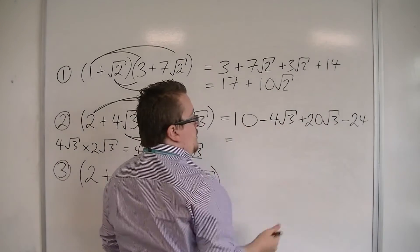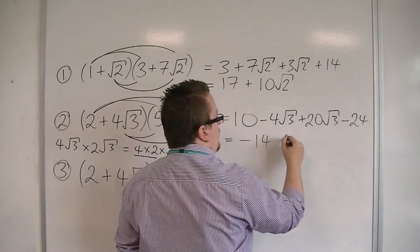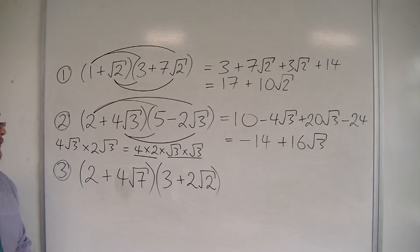So we've got 10 take away 24 is -14, and -4√3 plus 20√3 is 16√3. And that would be my final answer for number 2.